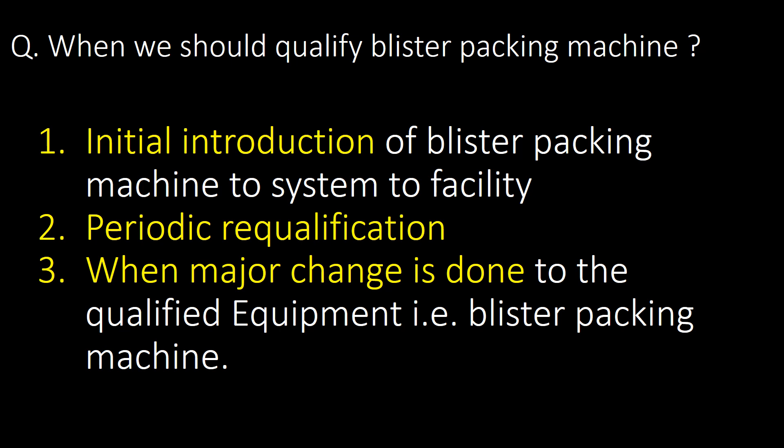When should we qualify a blister packing machine? There are three frequencies: first, at the initial introduction of the blister packing machine to the system or facility. Second, periodic re-qualification — this is done based on the plant-specific ESOP, usually after 2 or 3 years. Third, when a major change is done to the qualified equipment, i.e., the blister packing machine.